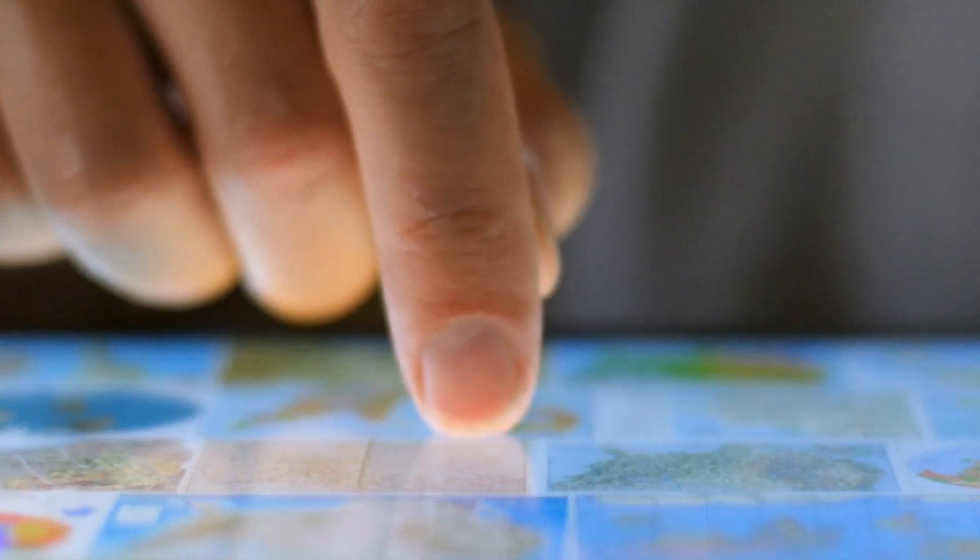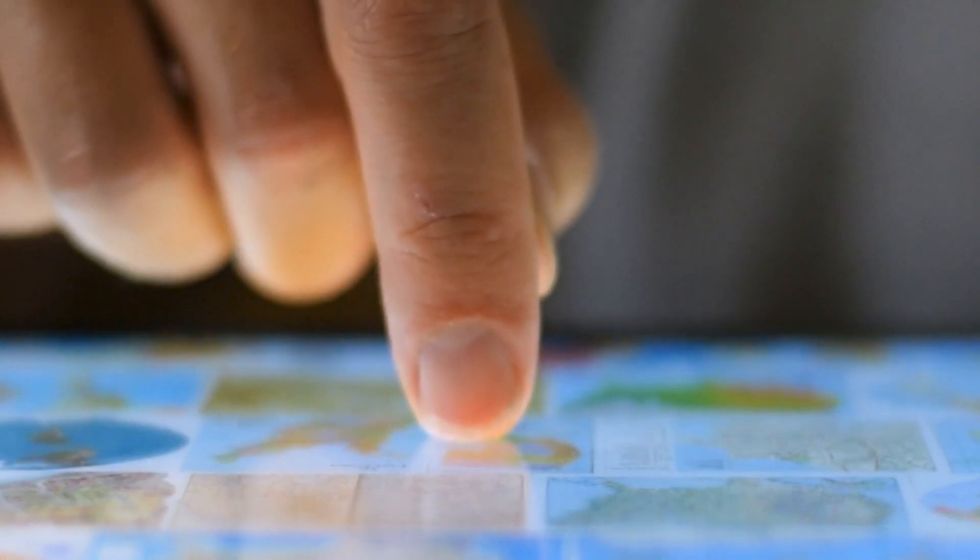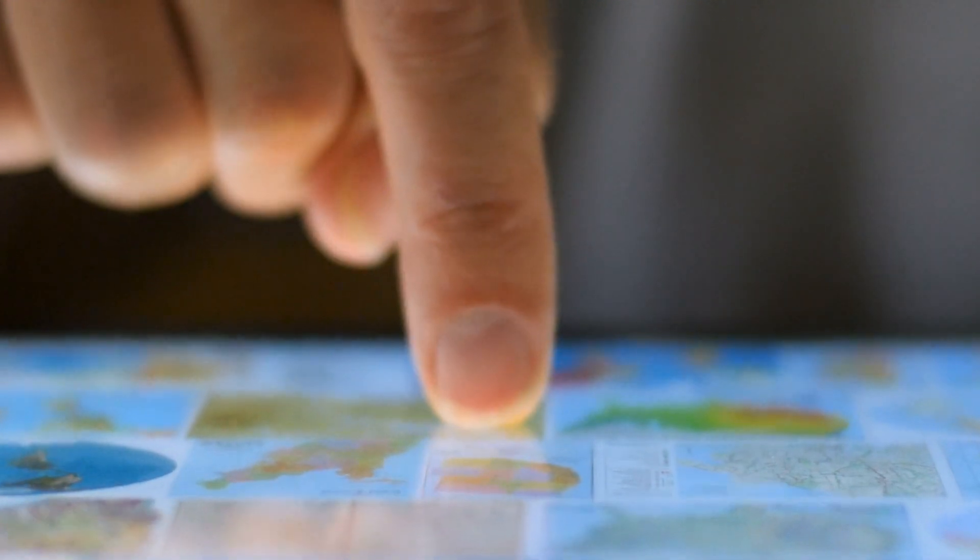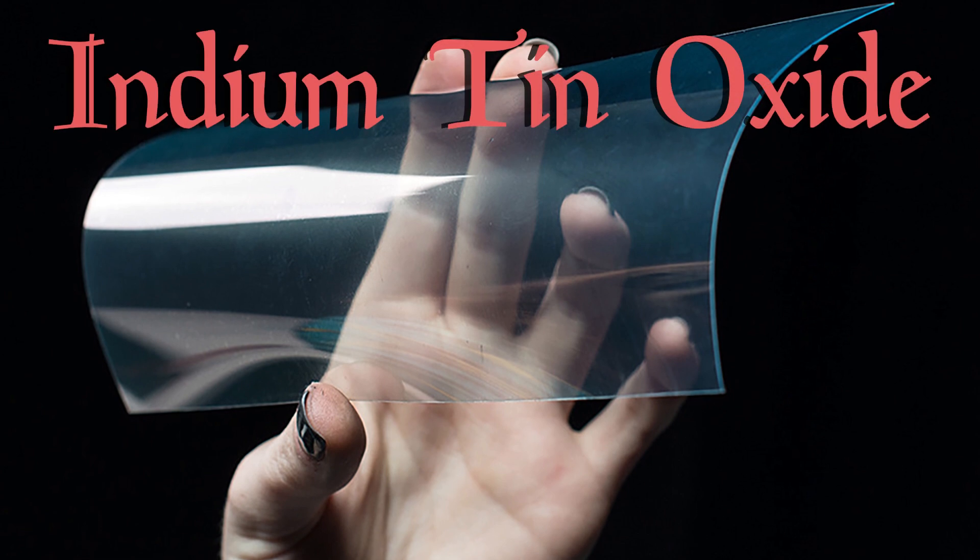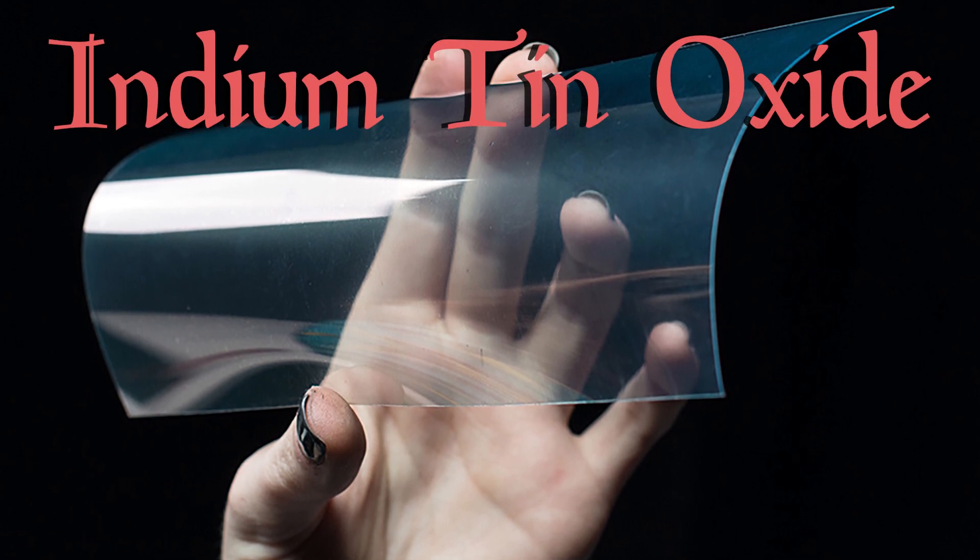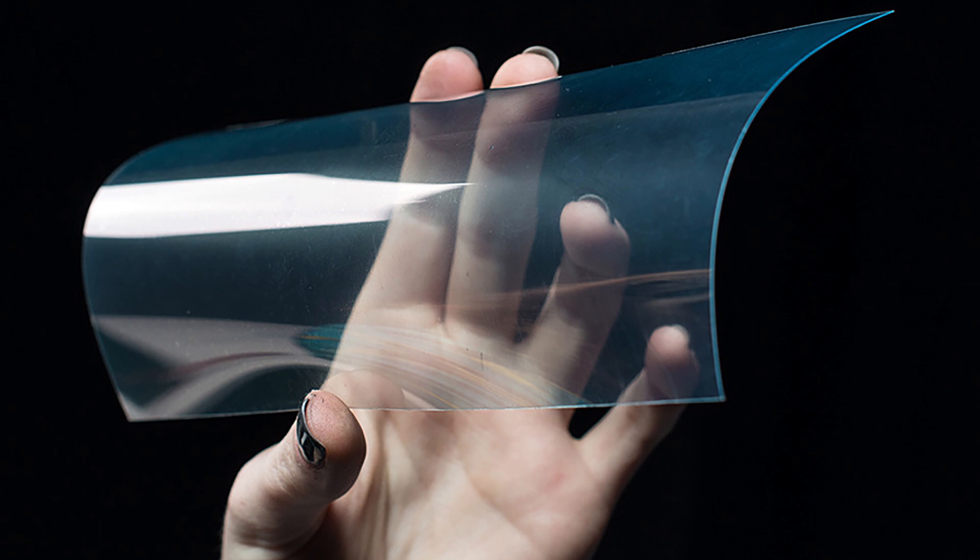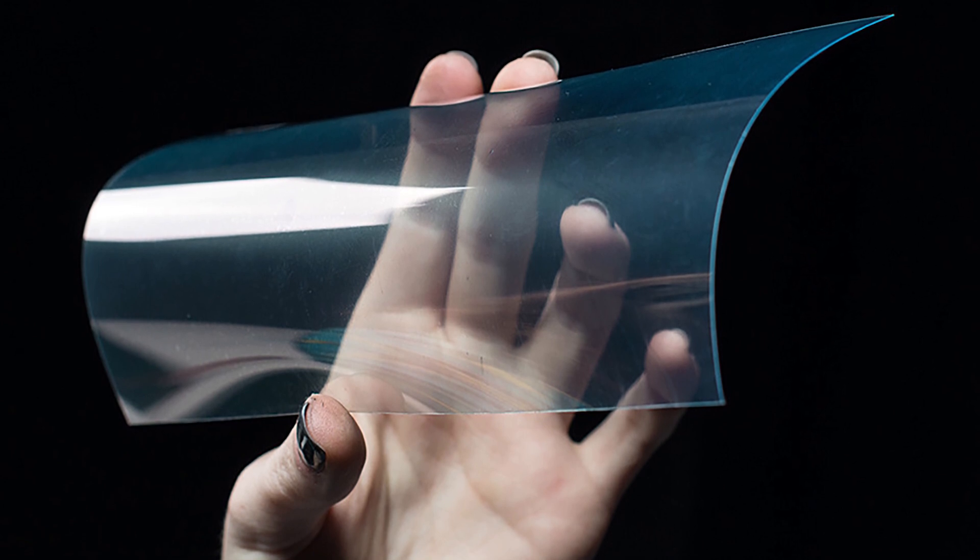The properties of tin are harnessed with every tap, swipe, and pinch conducted on touchscreens all around the world. Tin is a part of an extraordinary compound called indium tin oxide, or ITO. ITO is unique because it possesses two qualities needed for touchscreens.